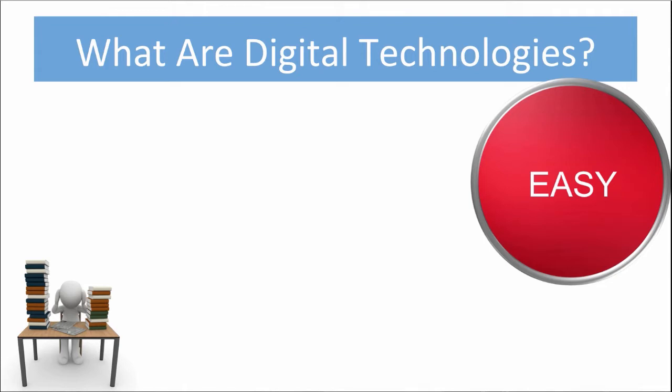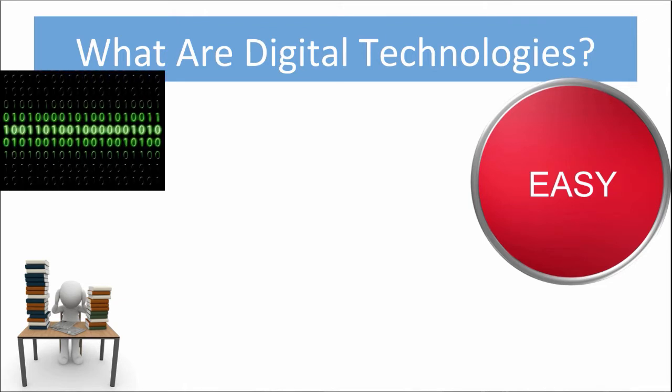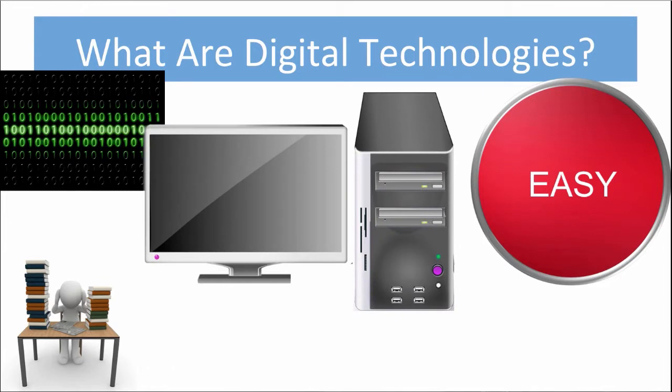Digital systems, as compared to analog systems, are those that are based on discrete values such as zeros or ones — this is known as binary code. In order to convert real-world information into digital formats, a processor is required, combined with memory of some kind so that pre-processed and post-processed information can be stored. This is the basis of central processing units in modern computers, which form the heart of most digital technologies currently in use.